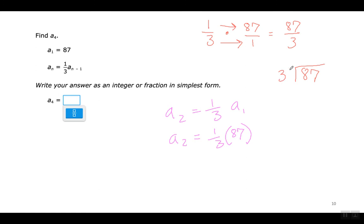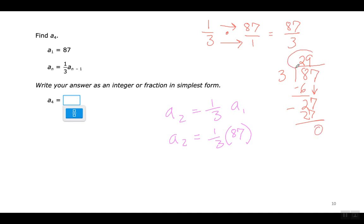Now to divide: 3 goes into 8 two times; 2 times 3 is 6; remainder 2. Bring down the 7 — 3 goes into 27 nine times; 9 times 3 is 27; remainder 0. So the second term is 29.